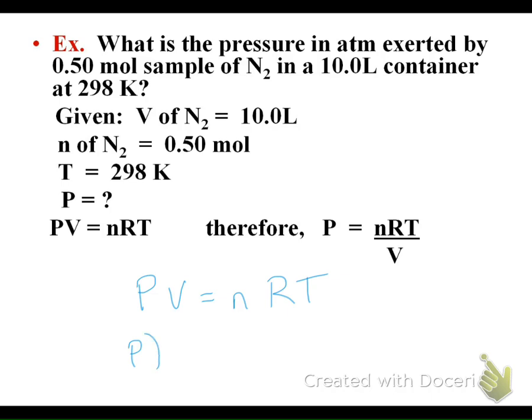Our pressure is what we're trying to find. Our volume is 10 liters, and I know I'm in the right units. That equals 0.5 moles, in the right units, times R, which is 0.0821, times the temperature, which is 298 kelvin. I know I'm in the right units there. Now just algebraically solve for the pressure.